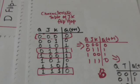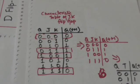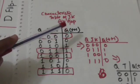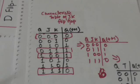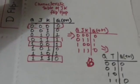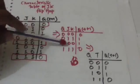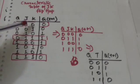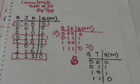The characteristic table of the T flip-flop can be obtained from the characteristic table of the JK flip-flop. We select only those entries from the JK characteristic table in which the value of J and K are the same. So we have selected only those rows from the table in which the value of J and K are the same, and we have obtained this reduced table.